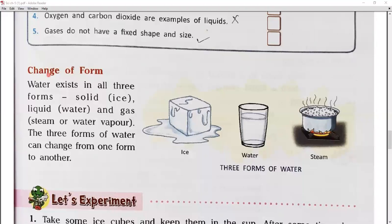The change of form. I have already told you that we have three forms: solid, liquid, and gas. Whatever things we have around us, there is no other form besides these three.